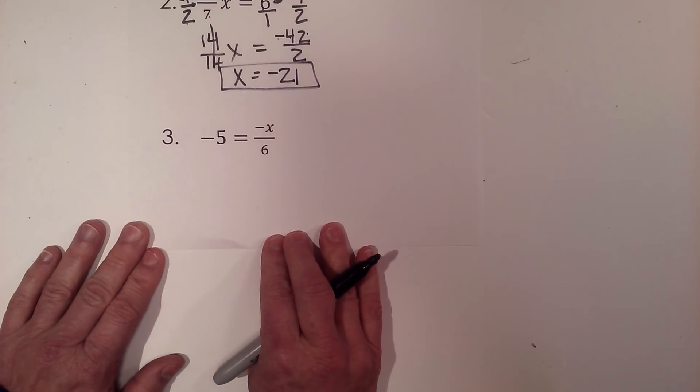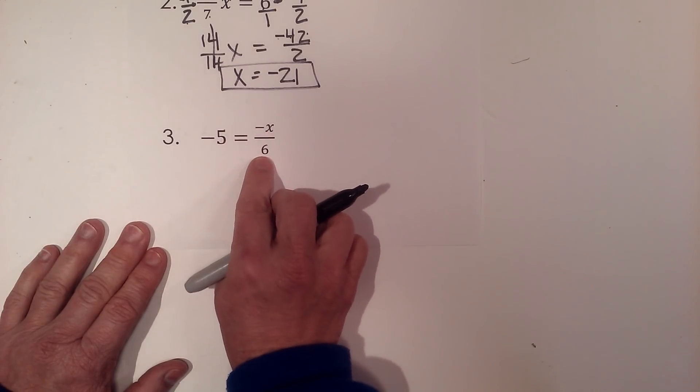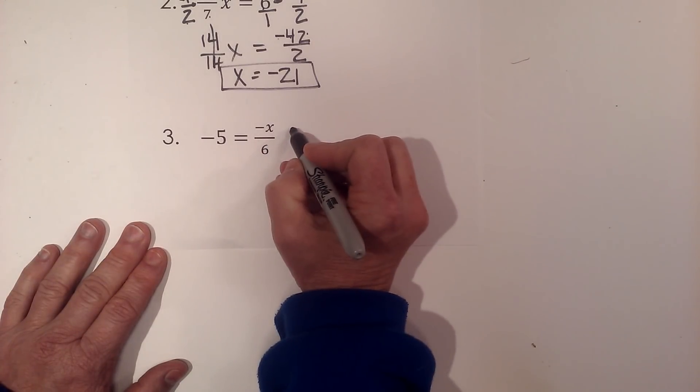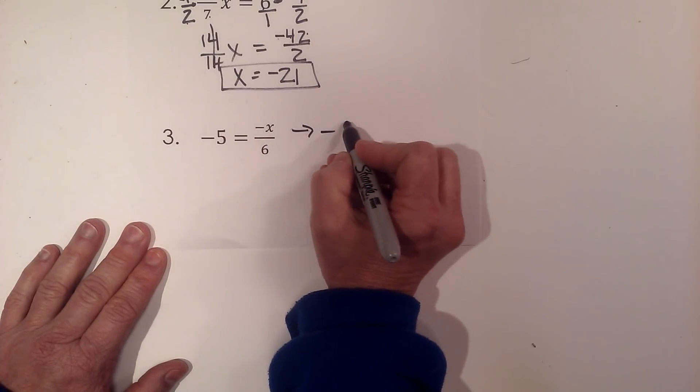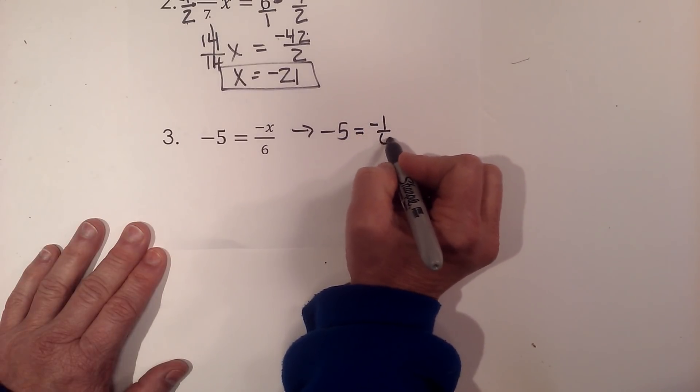Now let's check this last one. We have negative five equals negative x over six. This is different. My x is now on the right side, but I treat it exactly the same. I'm going to pull my fraction out, so I'll rewrite this as negative five equals negative one-sixth x.